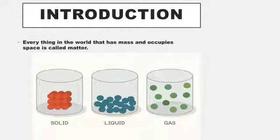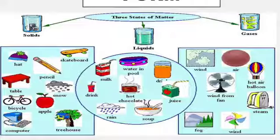Introduction of this chapter is: everything in the world that has mass and occupy space is called matter. In the world, there is matter in which you have weight and take place, such as solid, liquid and gas. These are 3 types of matter.